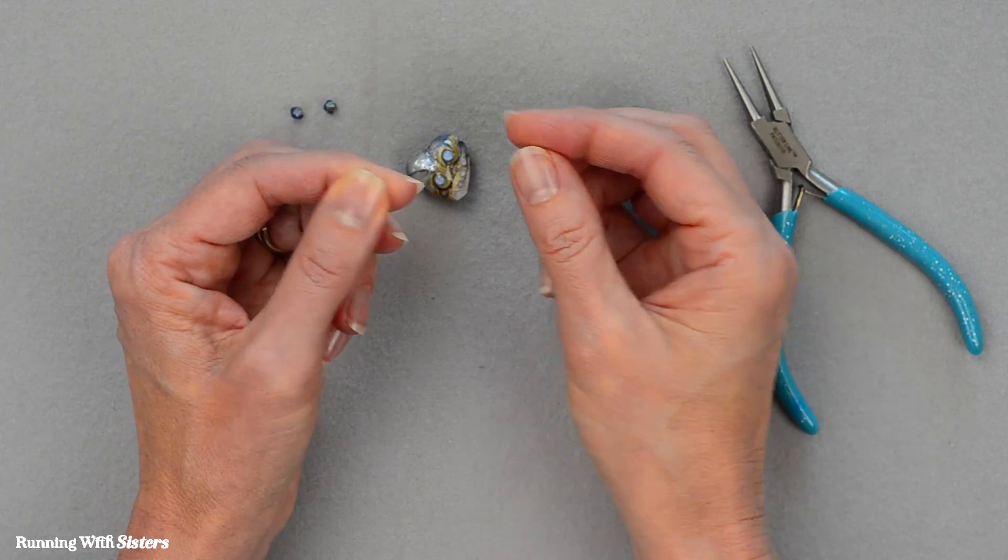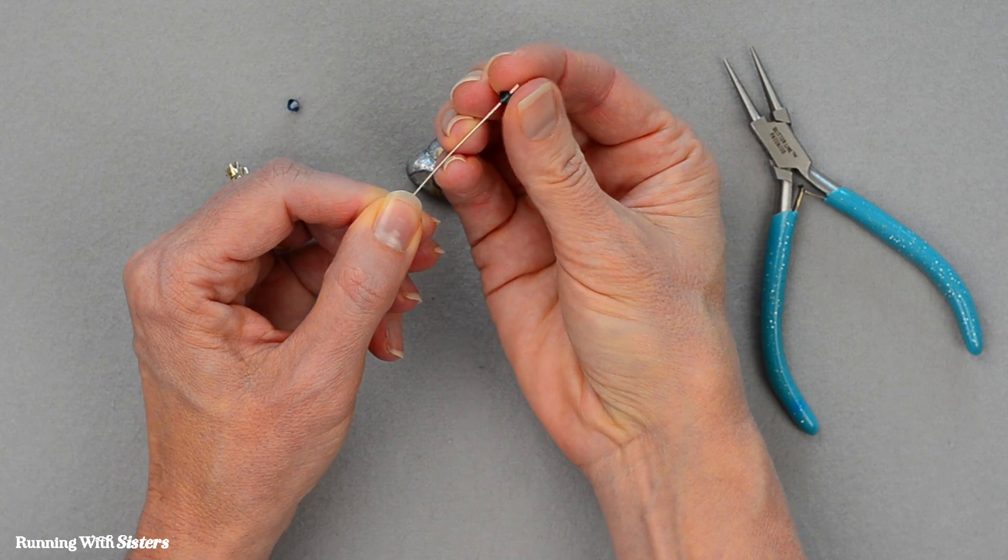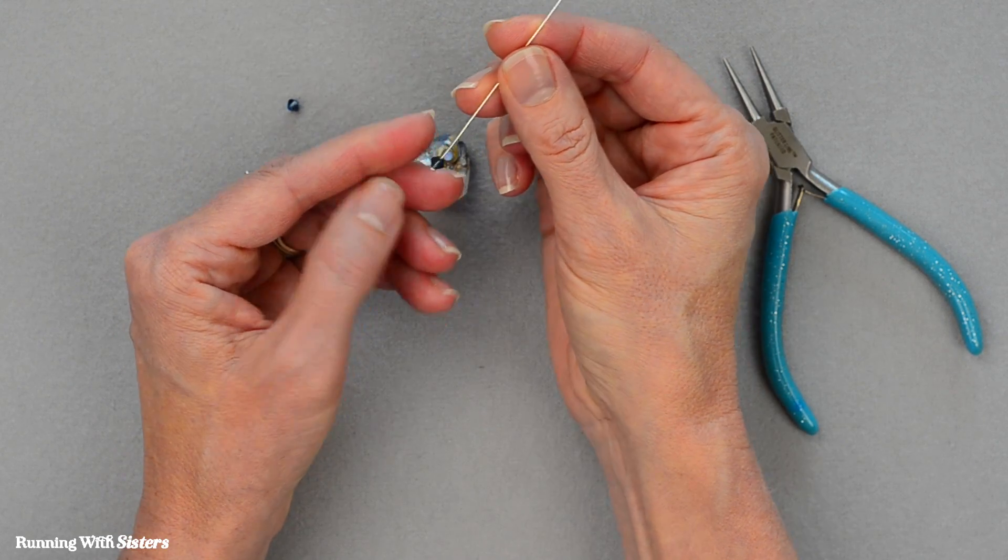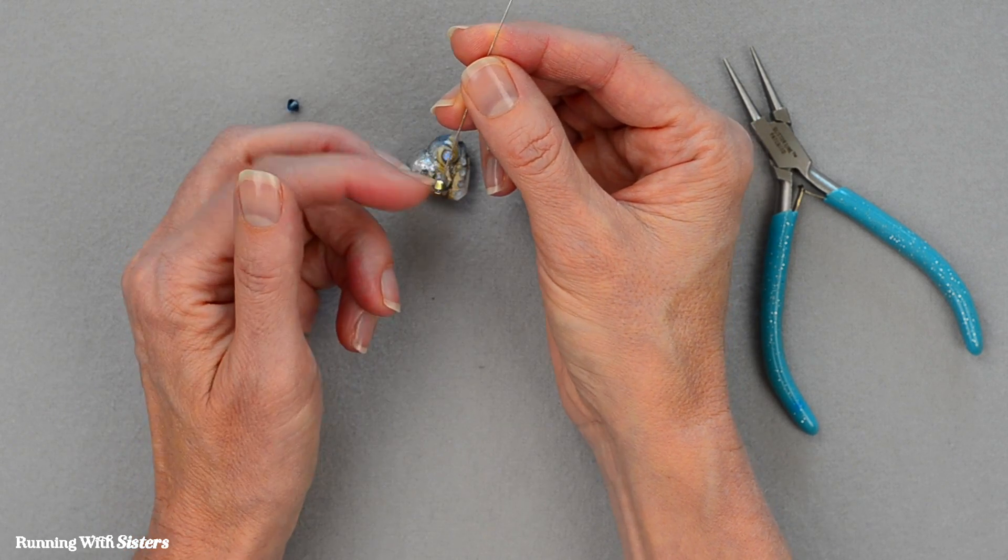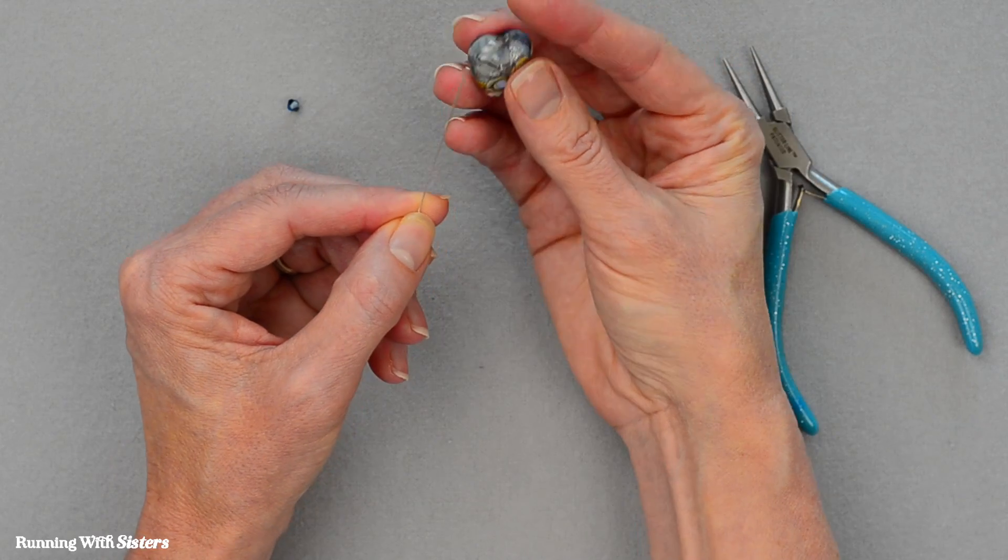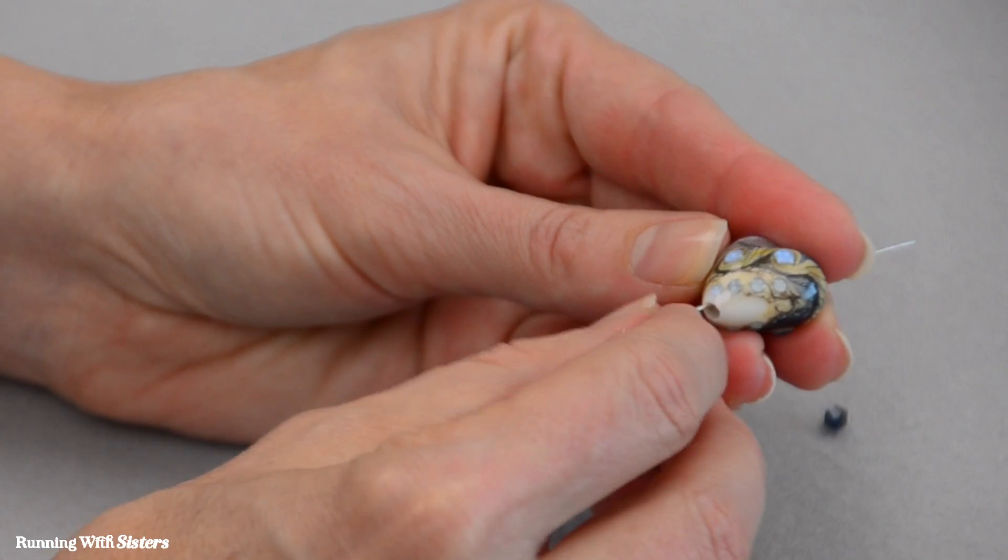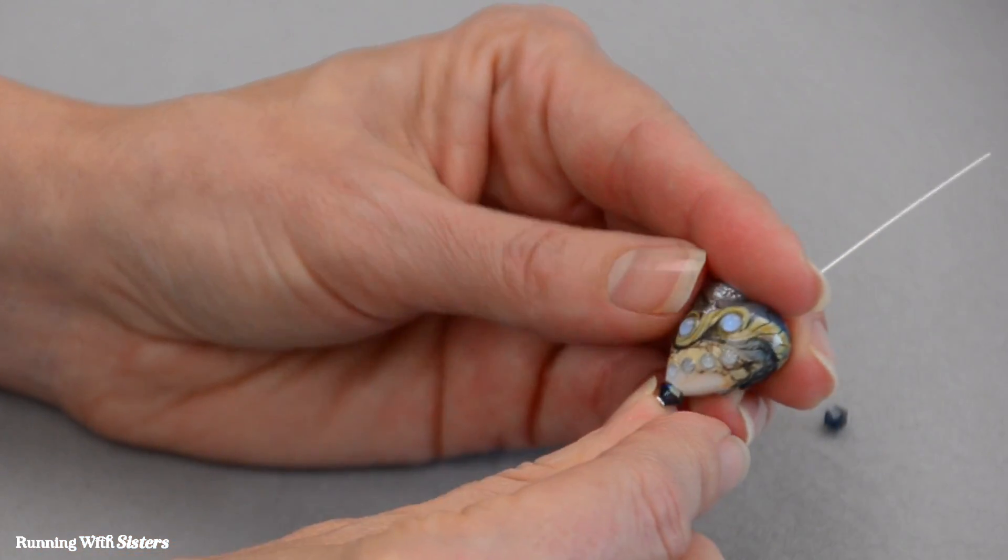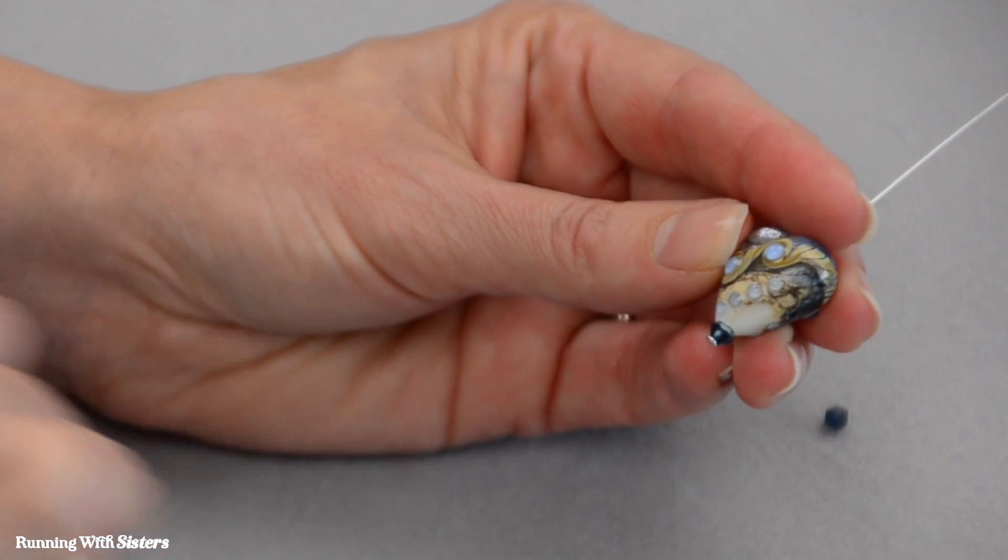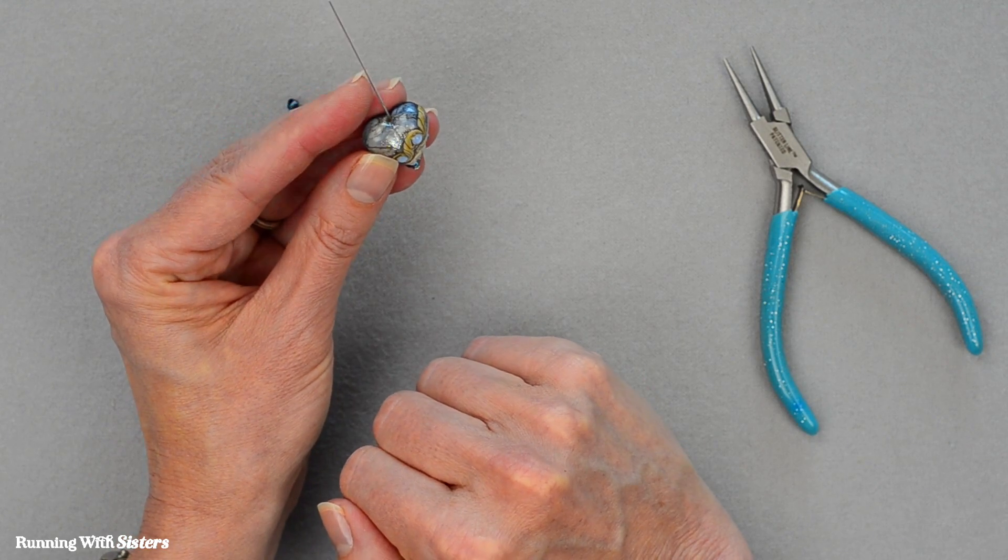What we're going to do is take our head pin and slide on a bicone bead. We're using just a 4mm bicone bead at the bottom of our pendant because we need this bead there to stop this heart bead from sliding off. The hole in the bottom is kind of big. And if we didn't put a stopper bead at the bottom it would slide right over the head of that head pin. So that's going to hold our bead in place and keep it on the head pin.